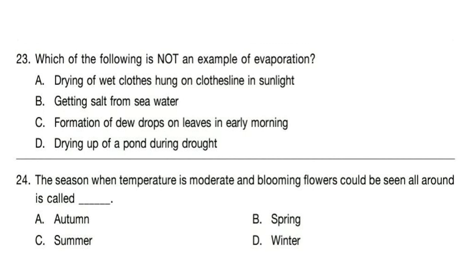The answer to Question 23 is the formation of dew drops on leaves in early morning. Question 24: The season when temperature is moderate and blooming flowers could be seen all around is called blank. Correct answer is option B — Spring.